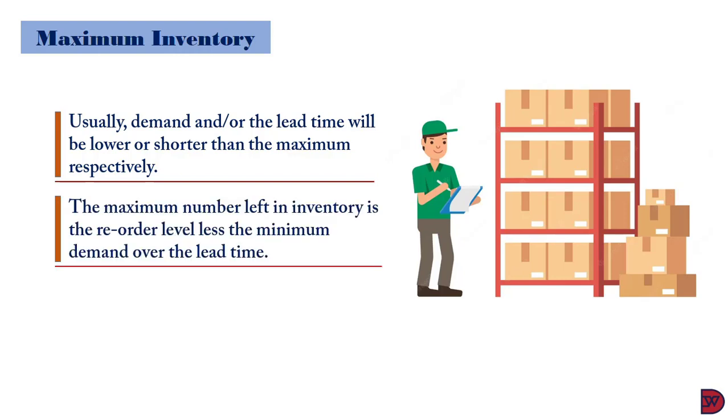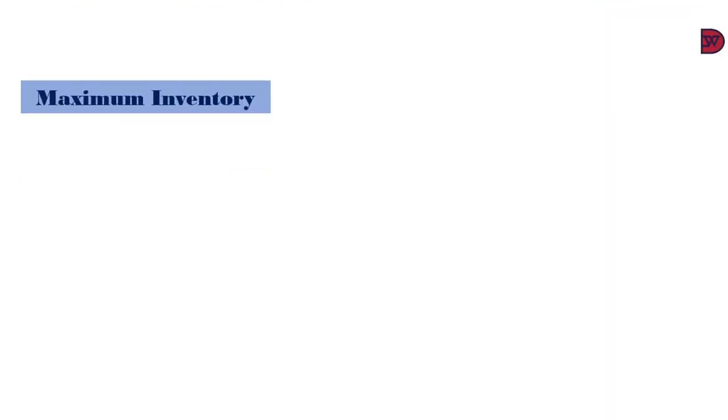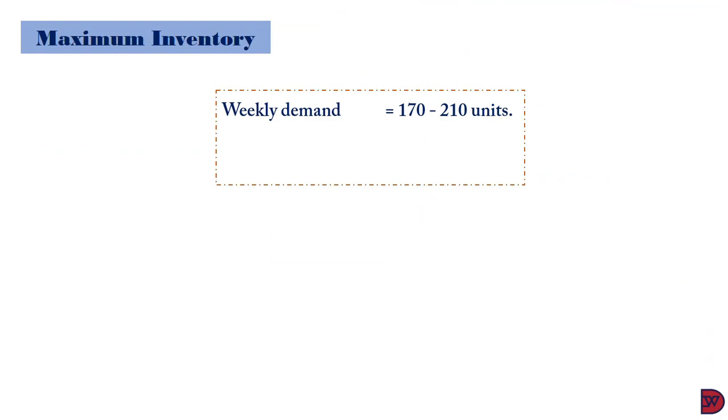So the maximum amount of inventory in holding is the difference between the maximum and minimum reorder levels plus the reorder quantity. So let's say if a business's weekly demand is between 170 and 210 units and their lead time is also between two and three weeks, their reorder quantity is 5,000 units.